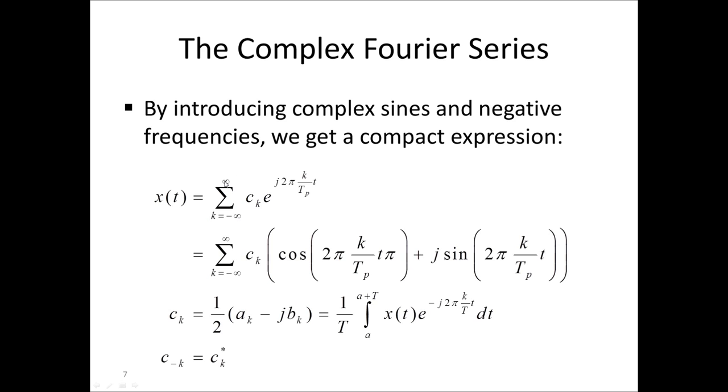Of some complex coefficients c sub k times e to j, two pi k over t sub p, times t. The c coefficients are related to the a and b coefficients in the regular Fourier series. And they can also be computed from one period of the signal x of t.